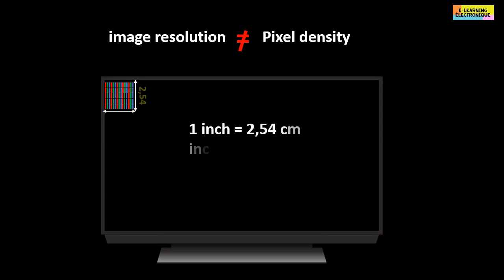A distinction is to be made between image resolution and pixel density. Image resolution represents the total number of pixels in an image, however pixel density is the amount of pixels that can be found on a square inch of the screen. One inch is equivalent to 2.54 centimeters. Pixel density is measured in PPI which means pixels per inch.